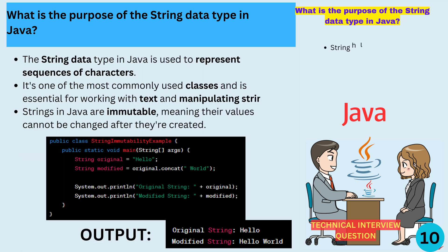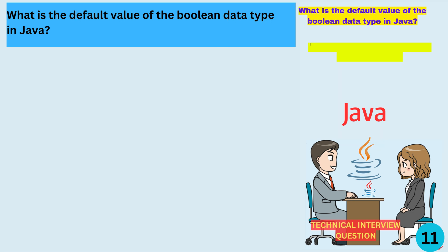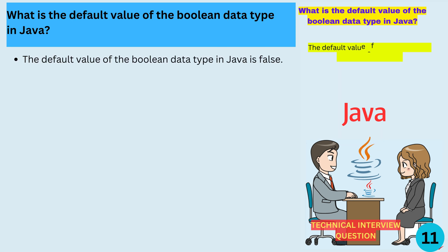What is the purpose of the String data type in Java? The String data type in Java is used to represent sequences of characters. It's one of the most commonly used classes and is essential for working with text and manipulating strings. Strings in Java are immutable, meaning their values cannot be changed after they're created. The default value of the boolean data type in Java is false.